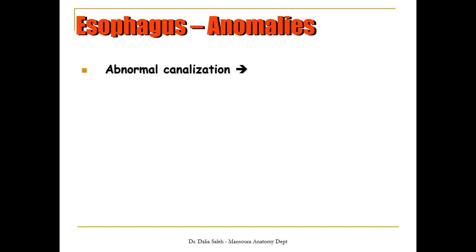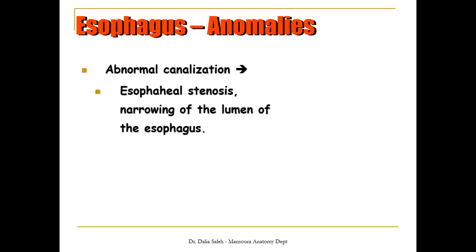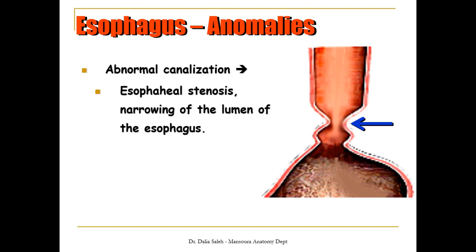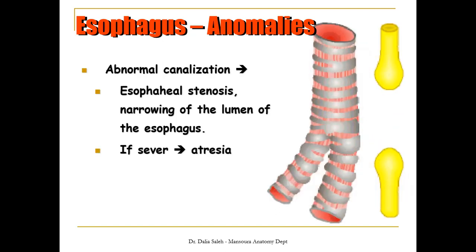Another type of esophageal anomaly involves canalization. If there is partial failure of canalization, we will have esophageal stenosis, meaning narrowing of the lumen of the esophagus, as we can see in this picture. But if there is no recanalization at one part of the esophagus, or if it is severe, we will end up with esophageal atresia again — the esophagus ends as two blind pouches connected by either a fibrous cord or opening into the trachea by a fistula.